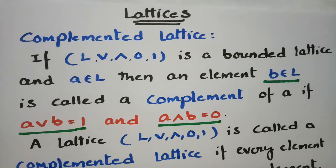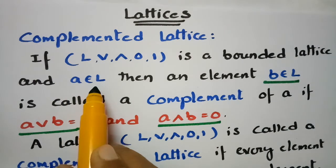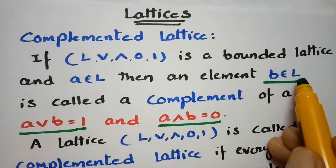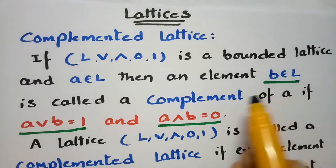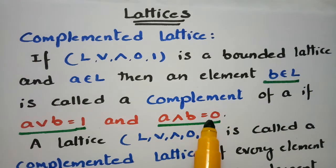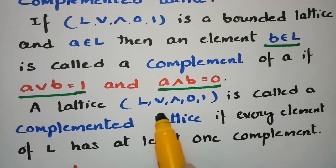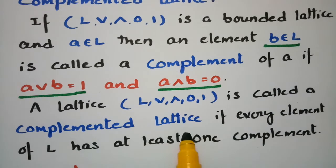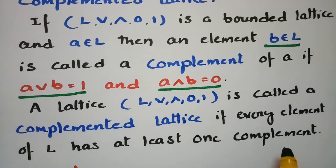For B to be the complement of A, L must first be a bounded lattice, and the conditions A join B equals 1 and A meet B equals 0 must both hold. A lattice L is called a complemented lattice if every element of L has at least one complement — that is, each and every element must possess a complement.